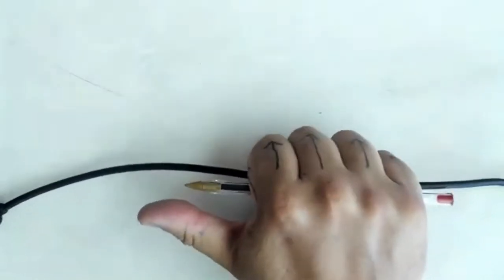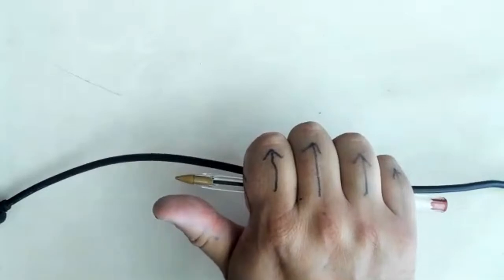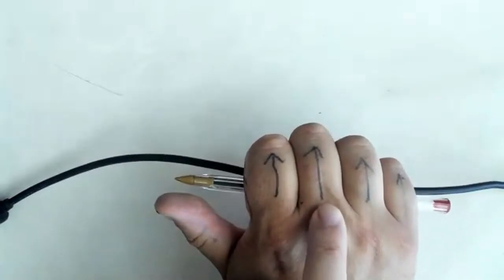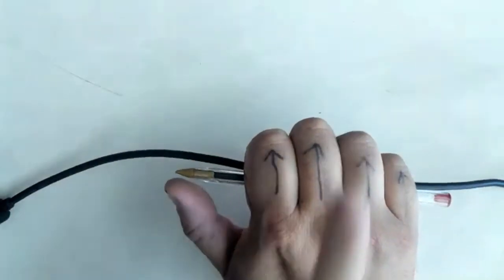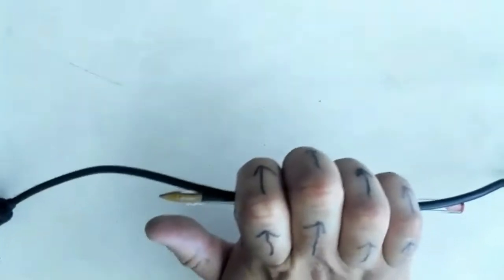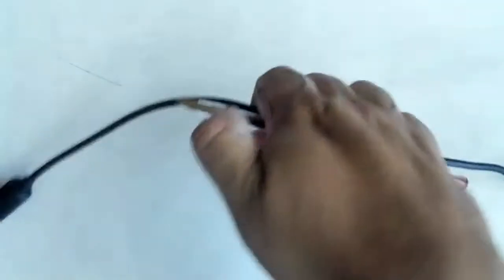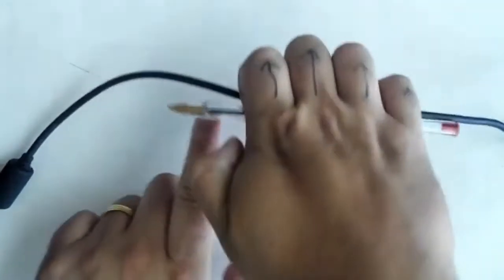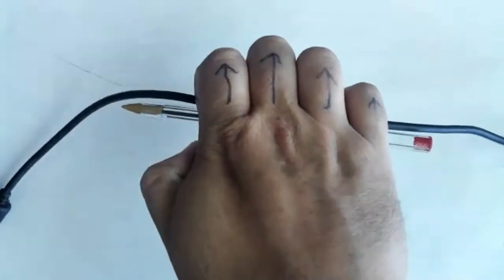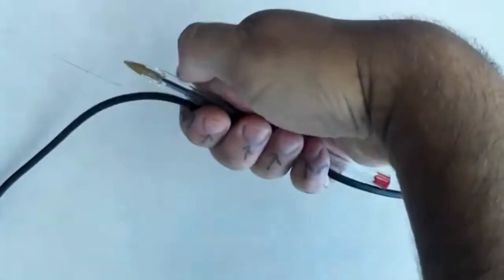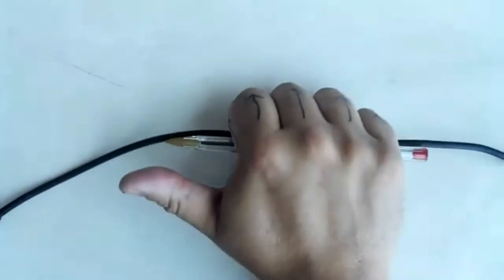If I grab it like this and point my thumb in the direction the current's traveling, you'll see that on top of the wire the magnetic field would be going up. If you curl around a little bit, on top of the wire it'd be going down, and on the bottom behind the wire it'd be going down this way. So the magnetic field is going to wrap around a wire if the wire is carrying current.